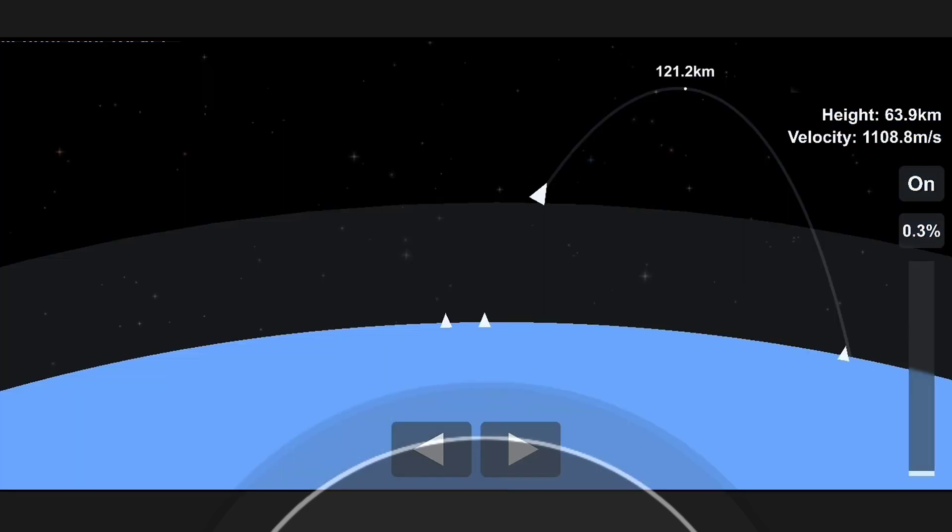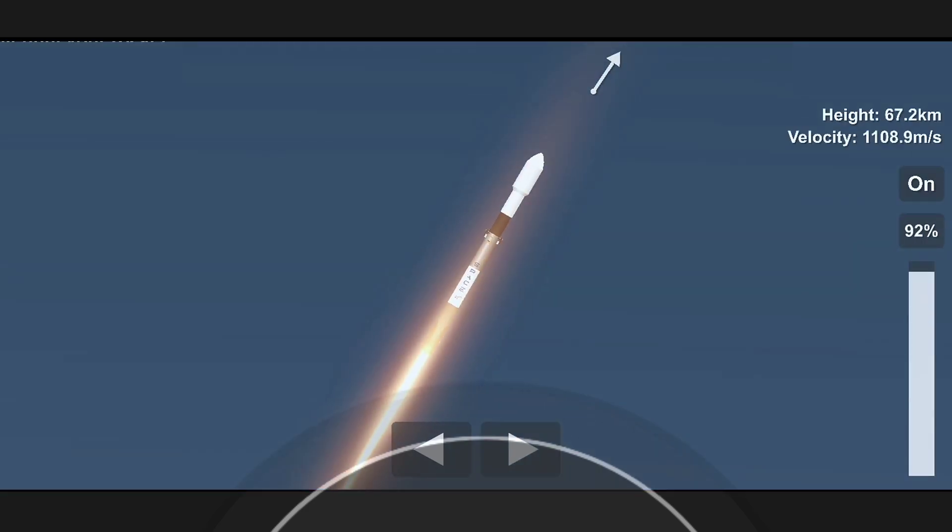And this is that first polar orbit. If you can see through the clouds here, you'll see some unique views you haven't seen from Falcon 9 over Florida.